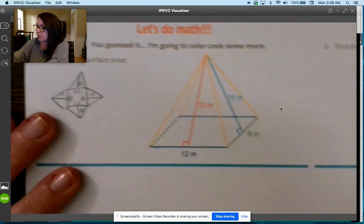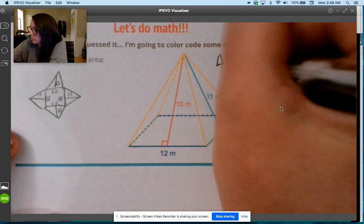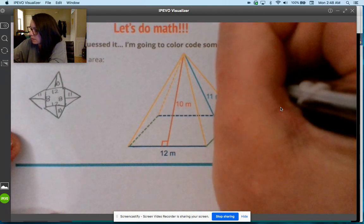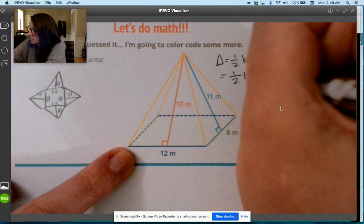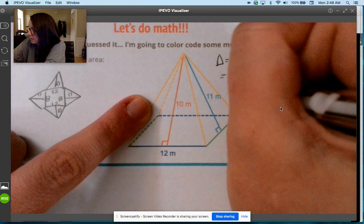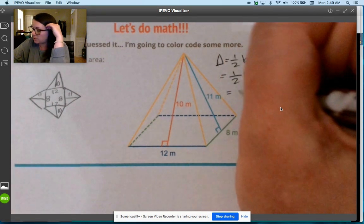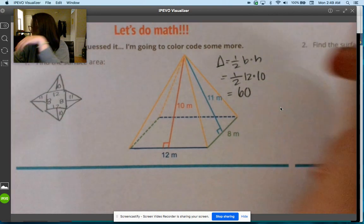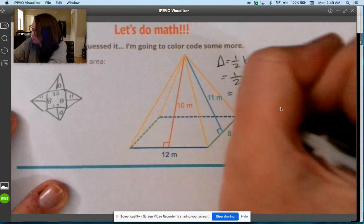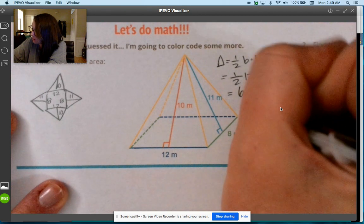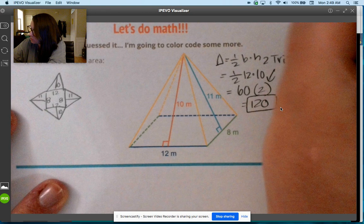For the triangle, we'll do one half base times height. We'll do this front one: the base is 12, the height is 10, so a half of 12 is 6, and then 6 times 10 is 60. There are two of those, so we got 120.